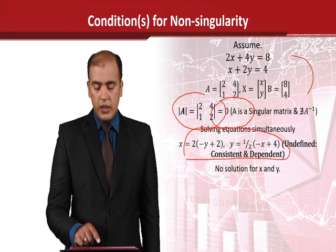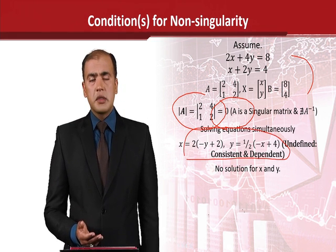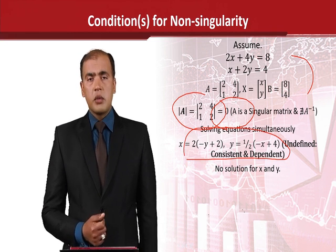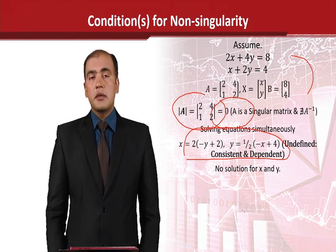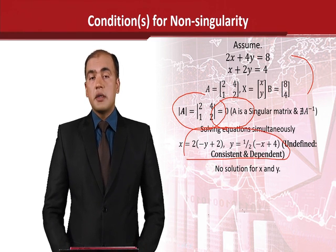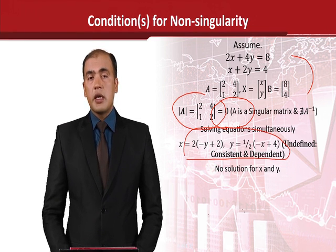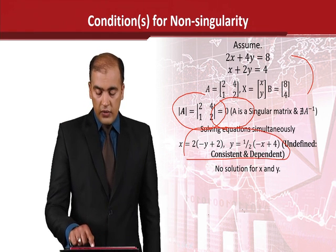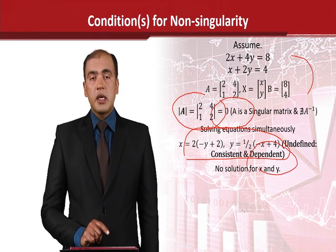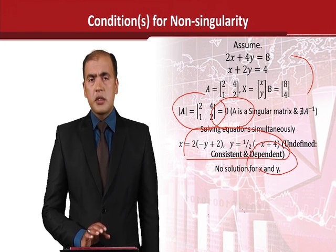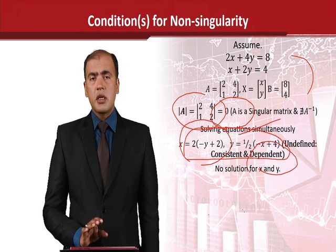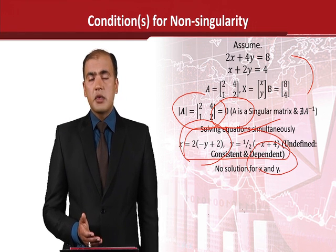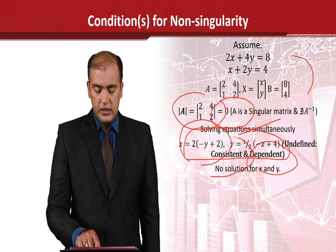When we solve these two equations through algebra, we do not get a clear answer — x is expressed in terms of y and y is expressed in terms of x. This is not showing a distinct situation; it is showing an overlap, or in other words, it is showing the dependence of these two lines. Therefore, we call this a dependent case. Secondly, there is no logical contradiction, so we can say that this case is consistent.